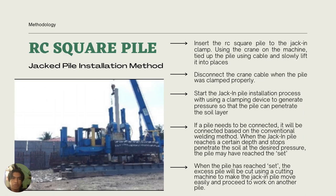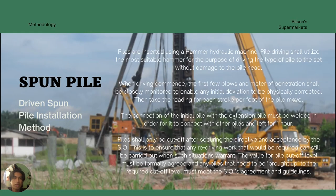For RC square pile, we use a jack-in pile installation method. The first step is to insert the RC square pile into the jack-in clamp using the machine, tight up the pile using cable and slowly lift into place. Second, disconnect the crane cable when the pile is clamped properly, then start the jack-in pile installation process, using a clamping device to generate pressure so that the pile can penetrate the soil layer. For the spun pile, we use a driven pile installation method. Piles are inserted using a hydraulic hammer machine. Pile driving shall utilize the most suitable hammer to drive the pile to the required set without damaging the pile head. When driving commences, the first few blows per meter of penetration shall be closely monitored to enable any initial deviation to be corrected. Then take the reading for each stroke per foot of pile movement. The connection of the initial pile with the insertion pile must be welded and left for one hour.